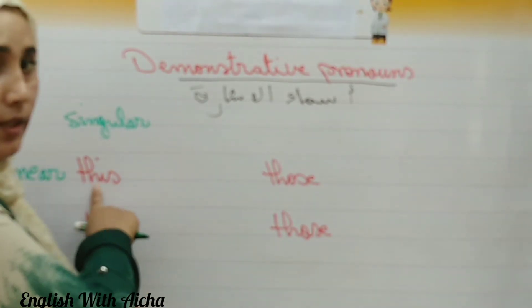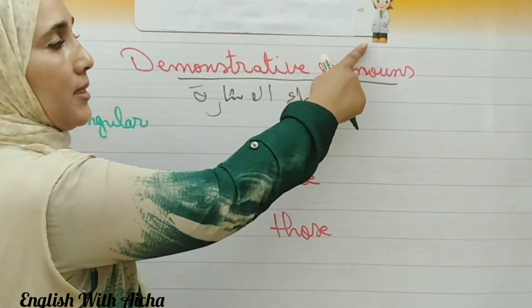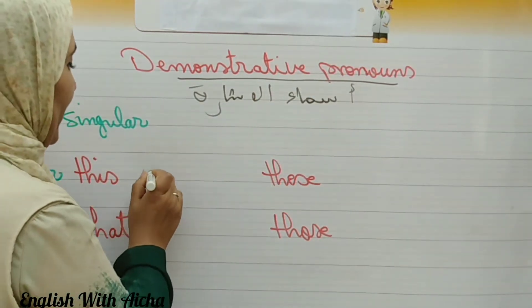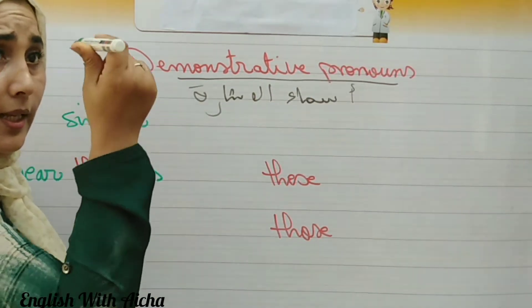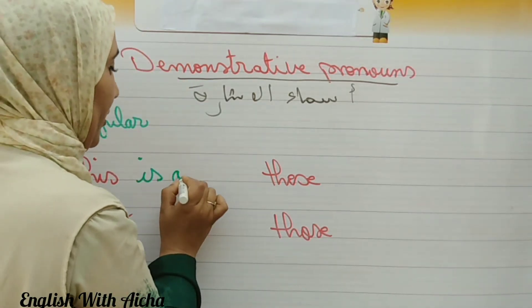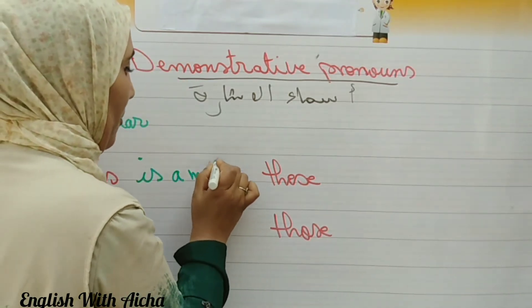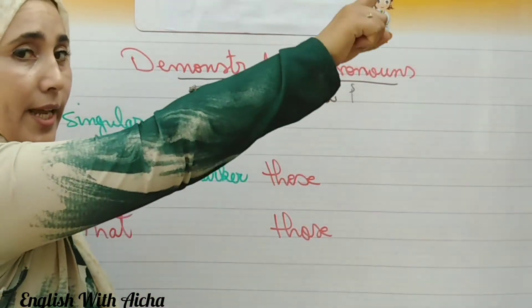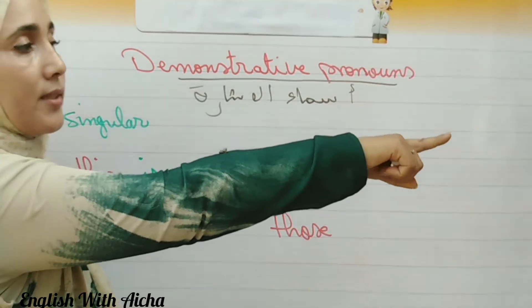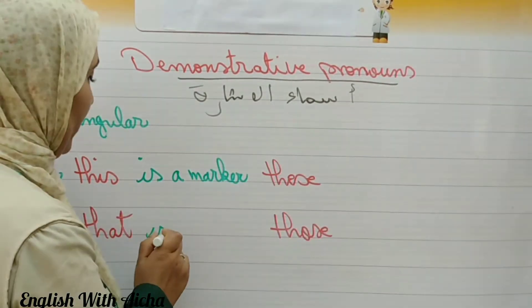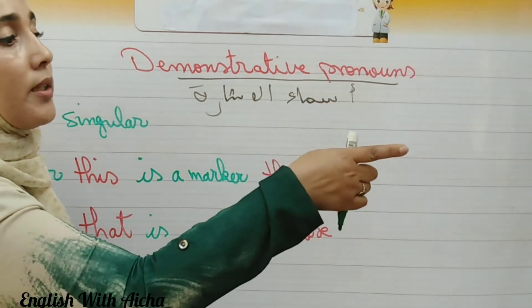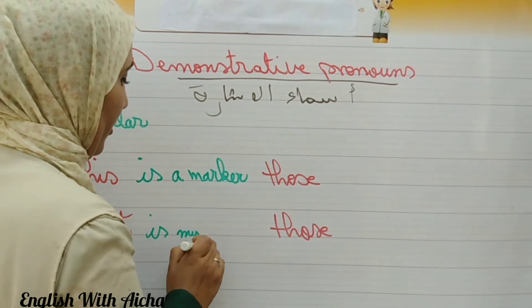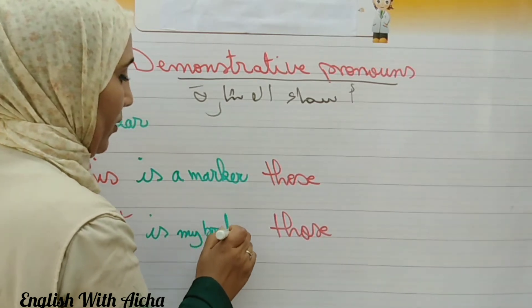For example, 'this is my teacher.' So 'this' is used for something singular and near. But if it's far, we use 'that.' For example, 'that is a marker' or 'that is my book' — just one object, but far away.